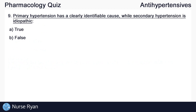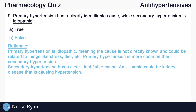Our last question for this quiz, number nine: primary hypertension has a clearly identifiable cause, while secondary hypertension is idiopathic. The right answer here is B — false. Primary hypertension is idiopathic, meaning that the cause is not directly known and could be related to things like stress, diet, and others. Primary hypertension is more common than secondary. Secondary hypertension has a clearly identifiable cause — an example could be kidney disease that is causing hypertension.